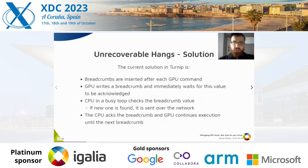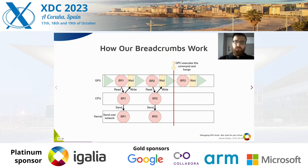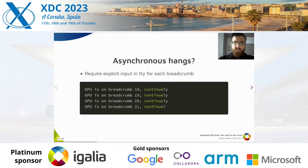The current solution in Turnip is that breadcrumbs are inserted after each GPU command which has a chance to hang. The GPU writes a breadcrumb and immediately waits for this value to be acknowledged on the CPU side. The CPU in a busy loop checks the breadcrumb value; if a new one is found, it is sent over the network. Only then does the CPU ack the breadcrumb and the GPU continues execution. Surprisingly, it worked not as slow as I would have thought. For asynchronous hangs, we require explicit input in TTY for each breadcrumb, or we could add a configurable delay between them. Anyway, it works well enough.